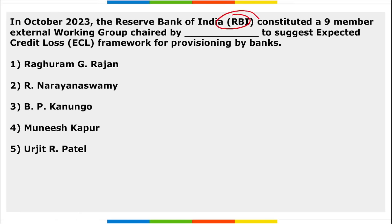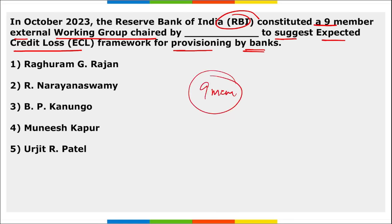RBI constituted a nine-member external working group to suggest the expected credit loss framework for provisioning by banks. This nine-member committee will be chaired by R. Narayanswamy.